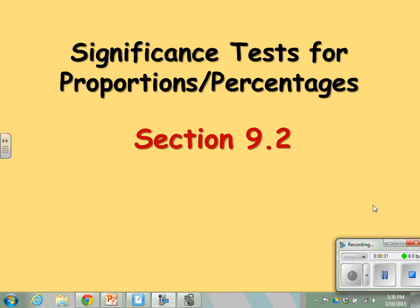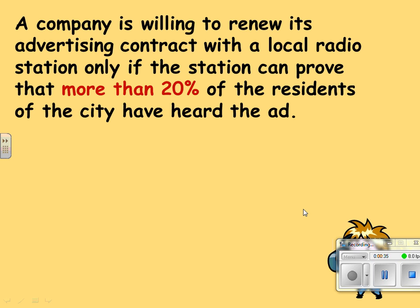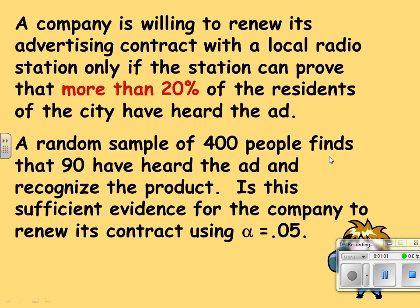Let's say we have a company who is willing to renew its advertising contract with the local radio station only if the station can prove that more than 20% of the residents of the city have heard the ad. A random sample of 400 people finds that 90 have heard the ad and recognize the product. Is this sufficient evidence for the company to renew its contract using alpha equals 0.05? So basically we want to write our statements here.